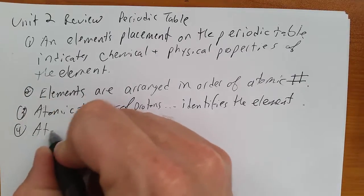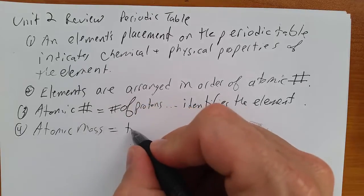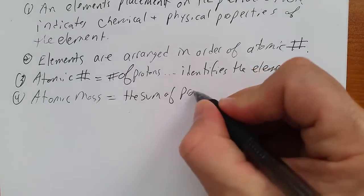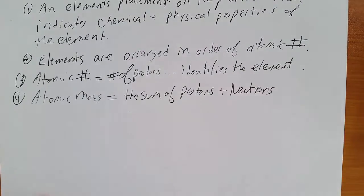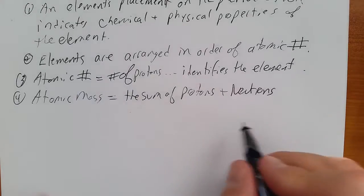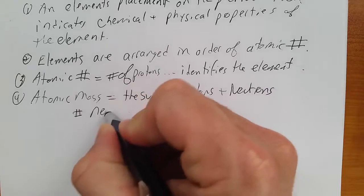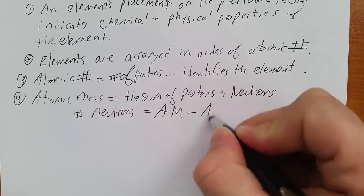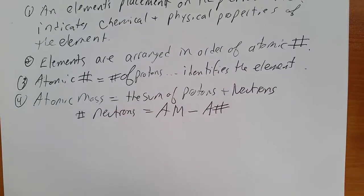The atomic mass is the sum of protons plus neutrons in the nucleus. So the sum of protons plus neutrons is the atomic mass. From that, the number of neutrons is equal to the atomic mass minus the atomic number. The atomic mass minus the number of protons gives you the number of neutrons.